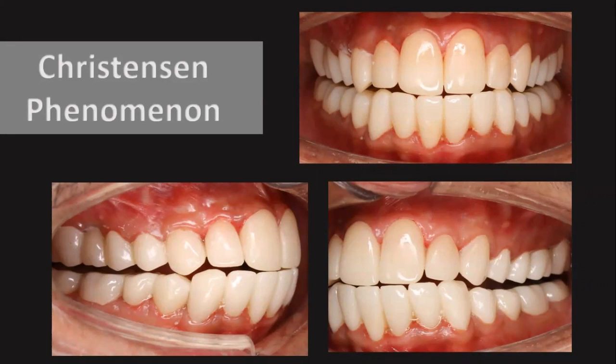No — there is a very big difference, and that is the Christensen phenomenon. Christensen phenomenon says that when we protrude the mandible to an edge-to-edge position in natural dentition, there is a constant gap — a separation of teeth in the posterior region. In complete dentures, we do not have the Christensen phenomenon, because we want bilaterally simultaneous posterior contact in all excursive movements — that is called balanced occlusion. We have balanced occlusion in complete dentures but not in natural dentition.